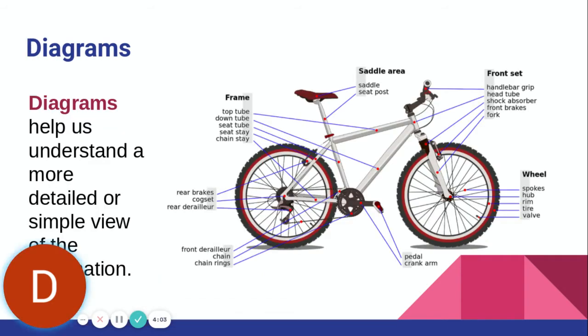The other is a diagram. A diagram and a chart can look very similar, but they are different. A diagram gives us a picture or an illustration of whatever they're talking about. And it tends to point out different parts of the object. For example, in this bicycle, they have arrows pointing to different parts of the bicycle and telling you what they are.